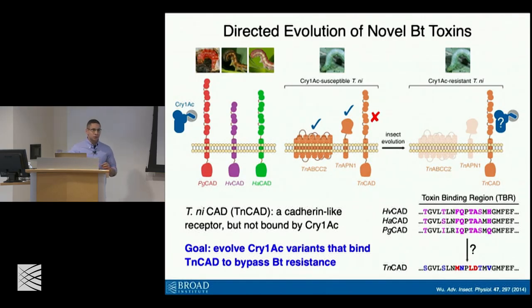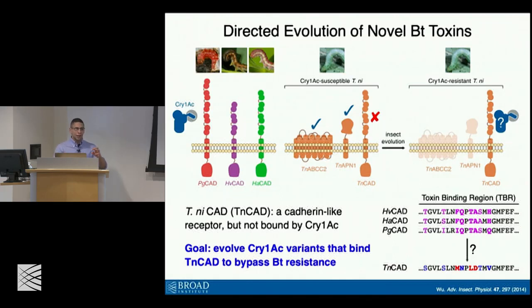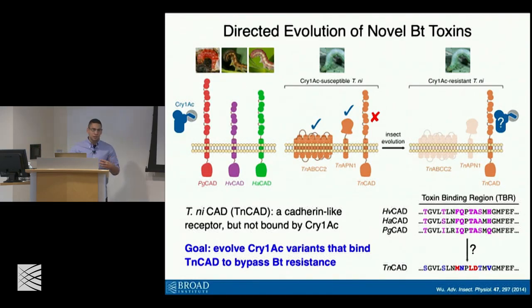So what we asked is: could we build a selection to evolve BT toxins to interact with a different receptor — in this case a cadherin receptor — that would potentially bypass this mechanism of resistance in Trichoplusia ni? Protein-protein interactions are a notoriously difficult class of things to evolve. When evolving a biomolecule that interacts with something in a linear or primary sequence space, it is easy to construct stepping stones that have single permutations along the way to allow stepwise improvements. Protein-protein interactions, by their very nature, require tertiary structure interactions — composite interactions between amino acids that might be very distantly separated in sequence space.